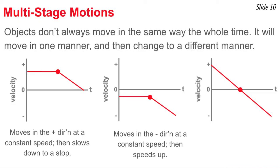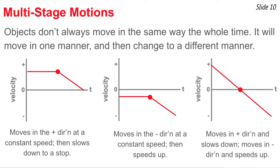The third example, probably the most difficult: the line is diagonal the whole time. In the first part, the line is above the time axis and approaching it — the object has positive velocity and is slowing down. After the transition point, the velocities become negative and the line gets further from the axis — so the object is now moving in the negative direction and speeding up. That's how you interpret two-stage motions on a velocity-time graph.